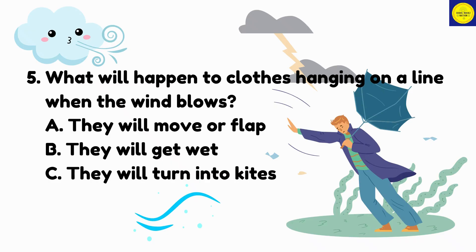Number 5: What will happen to clothes hanging on a line when the wind blows? A. They will move or flap. B. They will get wet. C. They will turn into kites.